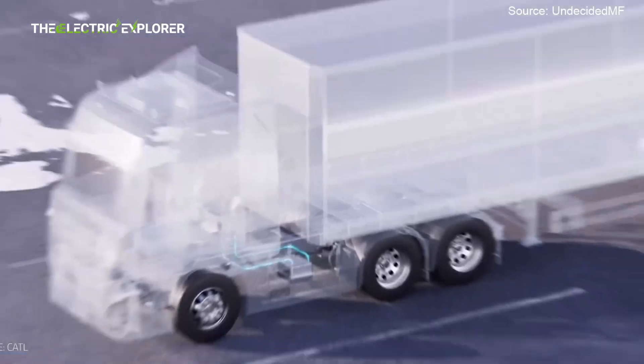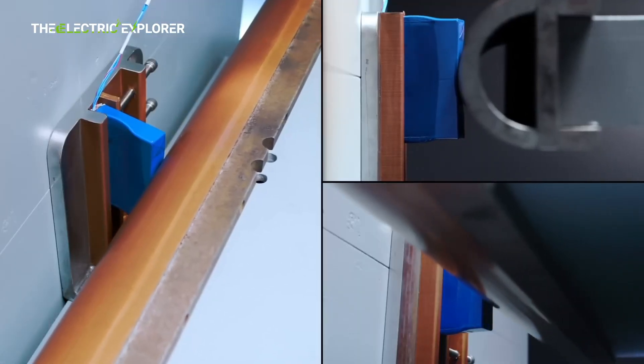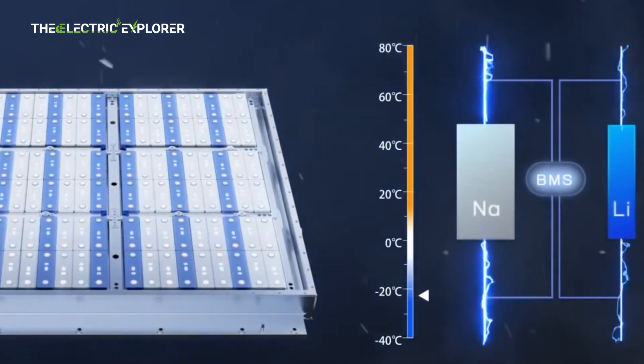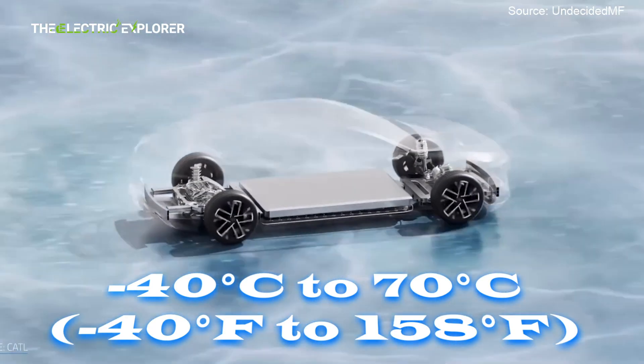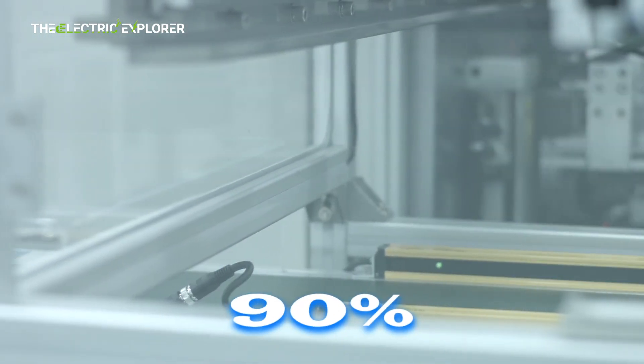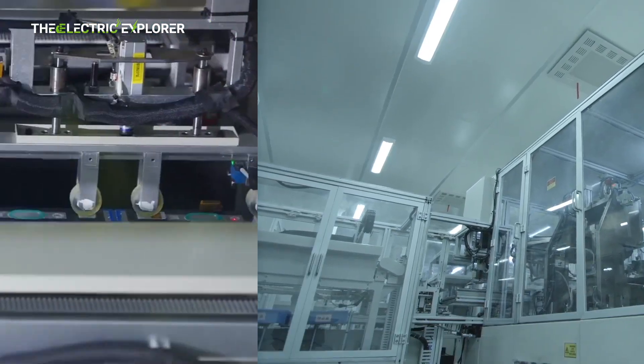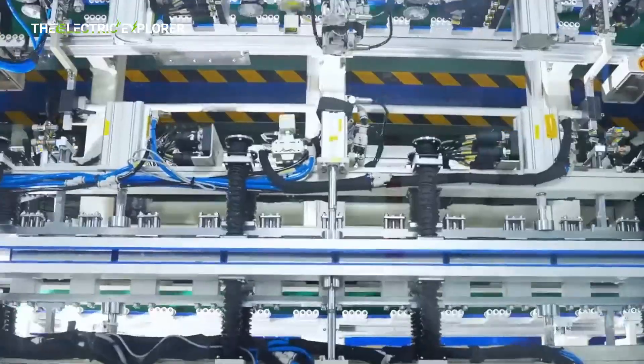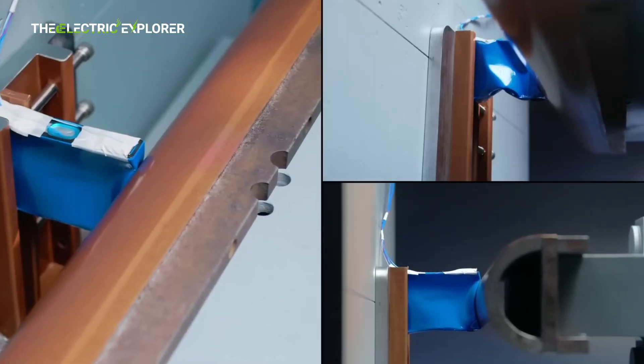The Naxtra battery pack boasts impressive specs, particularly in its temperature performance. It can operate in an extreme temperature range from -40°C to 70°C (-40°F to 158°F) and retains 90% of its power in freezing conditions. This is a game changer for cold weather regions like China's northern provinces, Russia, and Mongolia, where EV adoption has been limited by battery performance in the cold.